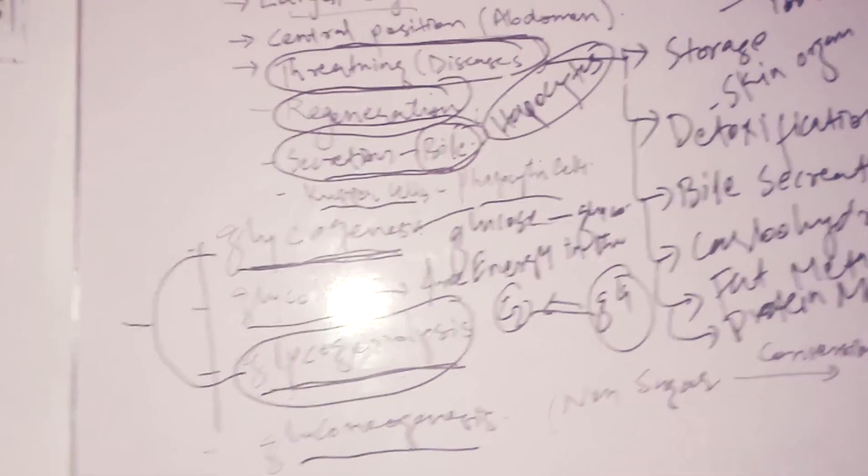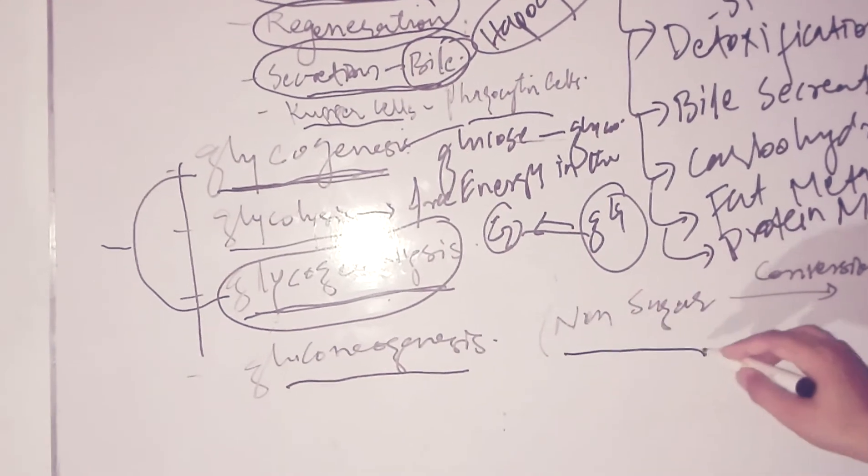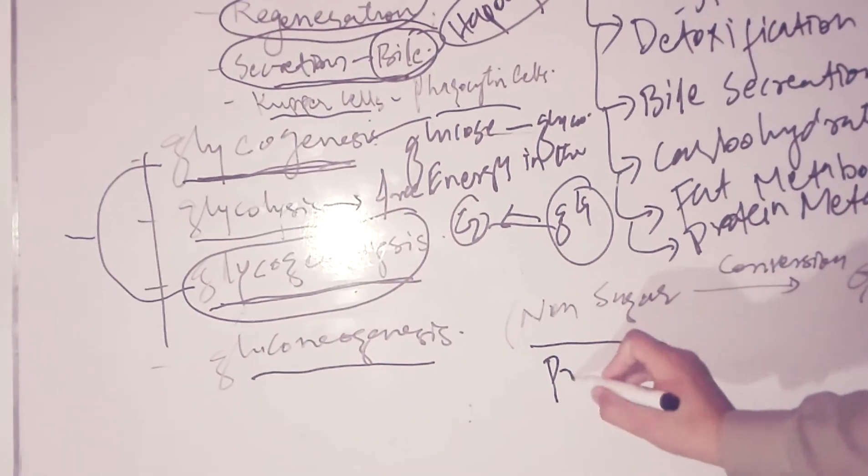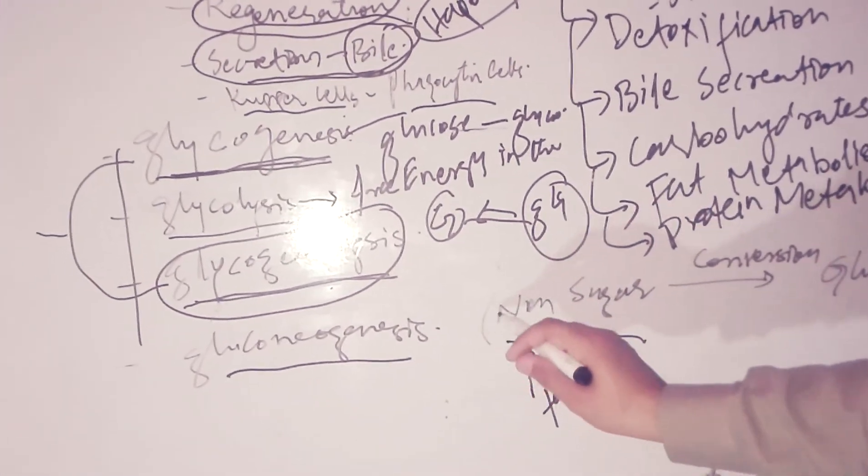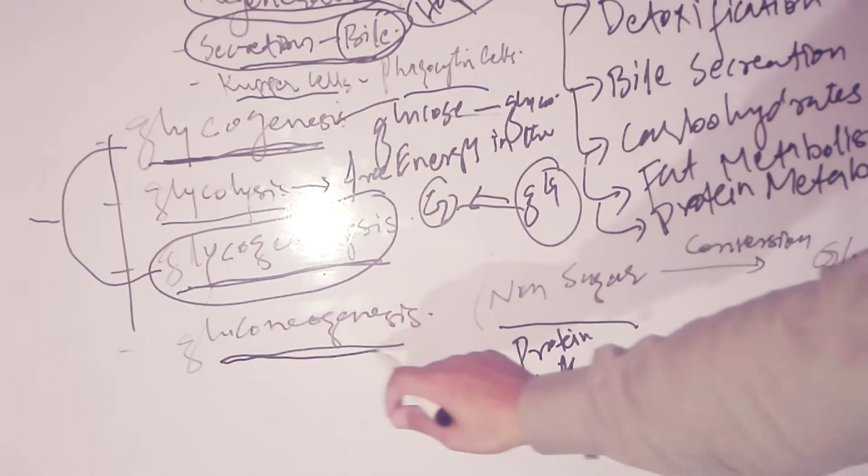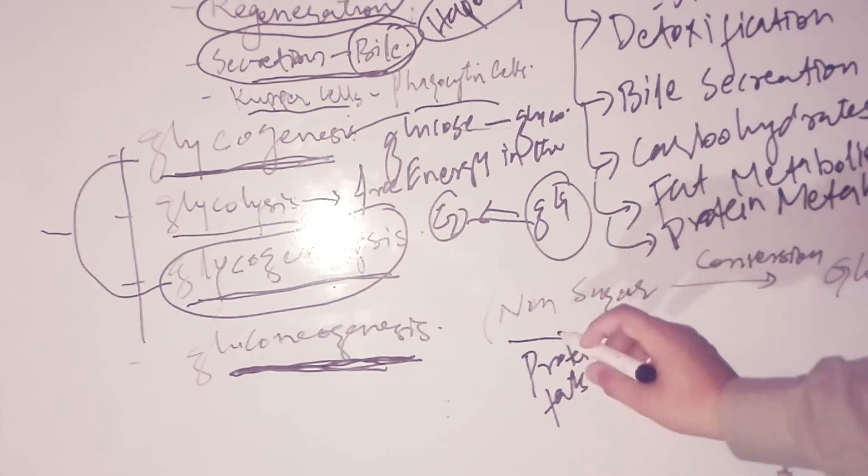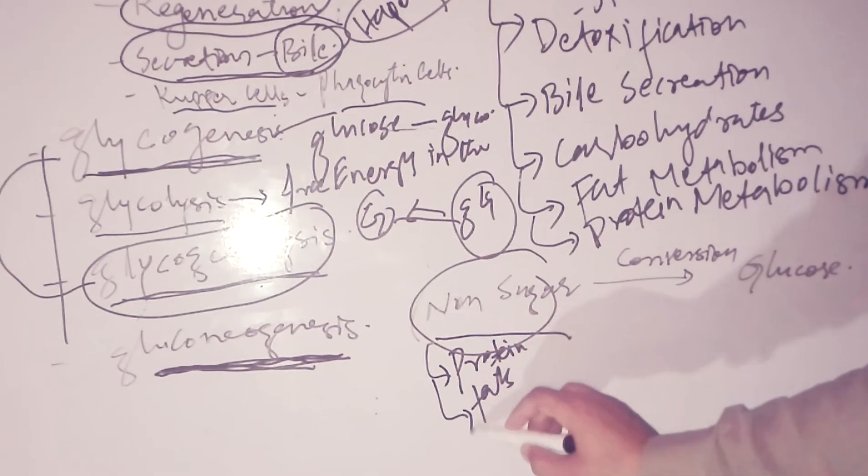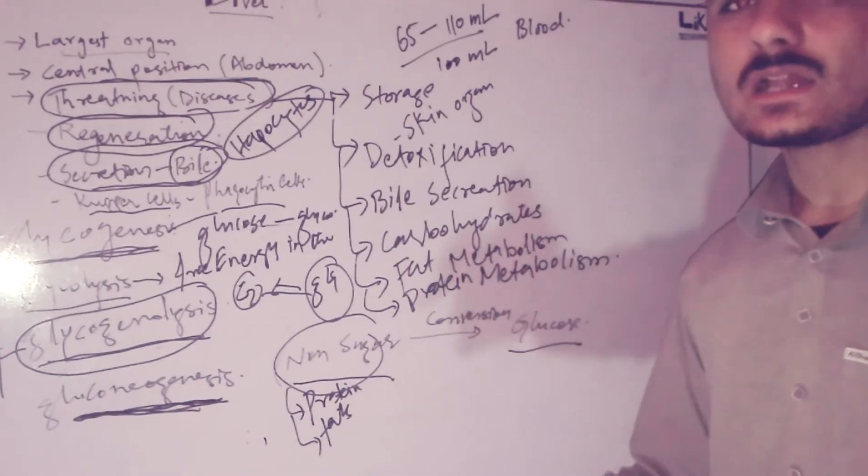There is also non-sugar conversion where different substances in the body, like proteins and fats, are converted into glucose. This conversion is called gluconeogenesis. You should know that gluconeogenesis is the non-sugar conversion where proteins and fats are converted into glucose. Liver has also other functions which we will study in further lectures.